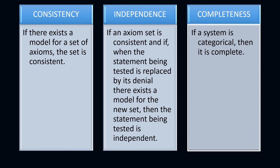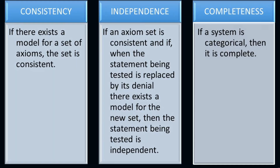The third property: if a system is categorical, then it is complete. When we speak of categorical, it speaks about isomorphism. Take note that Euclidean geometry is an axiomatic system, and it has those three properties — consistency, independence, and completeness.